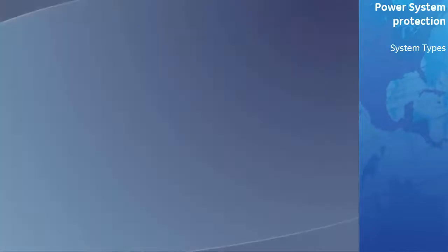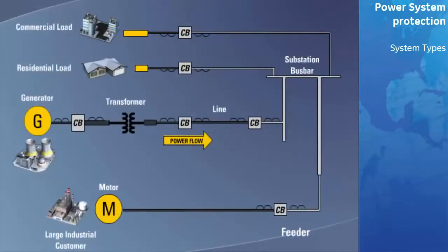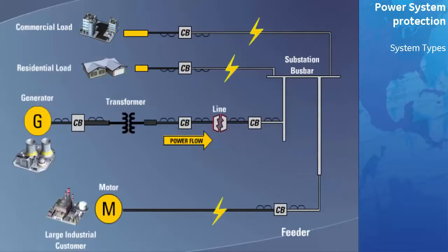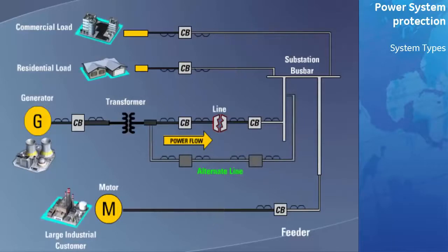The power system can be thought of as a chain, the links of which are the generators, the power transformers, the switchgear, the transmission lines, the distribution circuits, and the loads. The failure of any link destroys the capacity of the chain to do the work for which it was intended. One way in which the continuity of the chain can be preserved is to provide alternate links. The transmission lines, being exposed to the natural elements, are much more vulnerable to short circuit faults than the power transformers and switchgear. Hence, alternate transmission lines may be economically justified, whereas alternates for the power transformers and switchgear would not. The network of power systems now blanketing North America are often interconnected at various points to accomplish this.